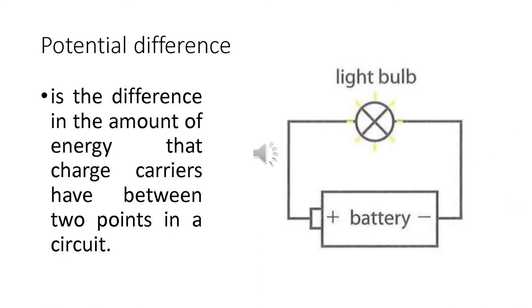So what is potential difference? It is also known as voltage. I presume that you have already heard about the term voltage. Now, it is the difference in the amount of energy that charge carriers have between two points in a circuit. This battery is what we call the voltage source or the potential difference source. This potential difference carries energy in two points, difference of energy in two points.